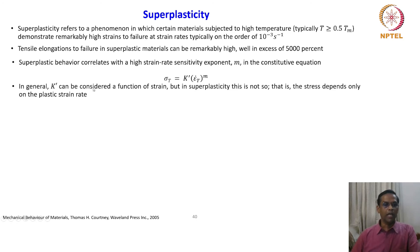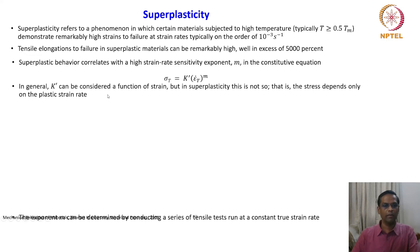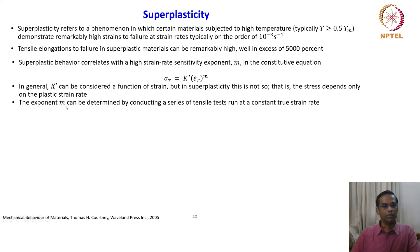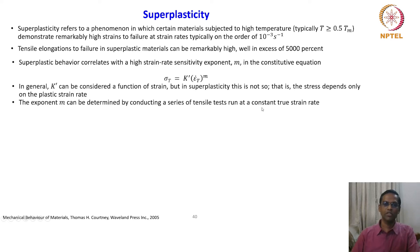In general, k prime can be considered a function of strain, but in superplasticity this is not so — the stress depends only on the plastic strain rate. The exponent m can be determined by conducting a series of tensile tests run at constant true strain rate. We have already seen how to determine the exponent m while looking at high temperature tensile deformation and the effect of strain rate and temperature.